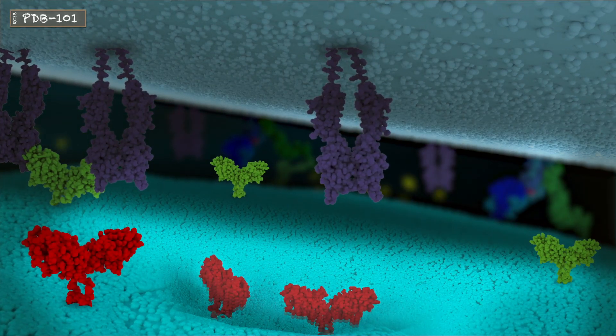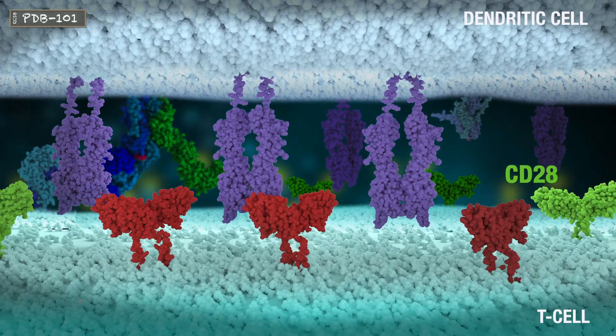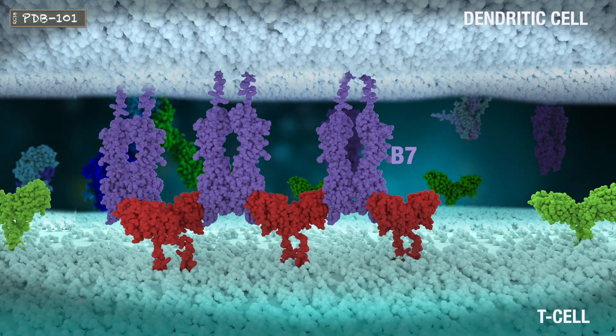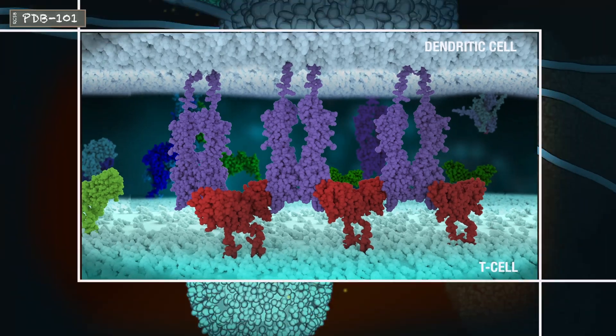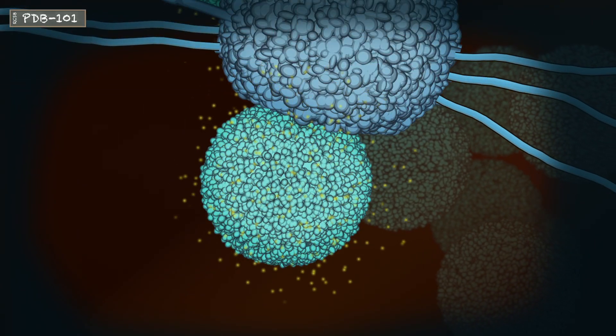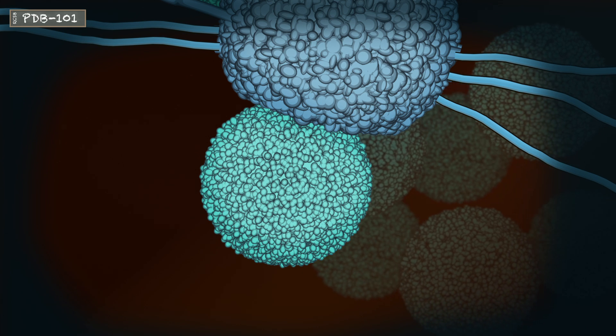Once there, CTLA-4 interferes with the reception of the secondary signal, outcompeting the T cell CD28 for B7 proteins on the dendritic cell. CTLA-4 binding of B7 counteracts the stimulatory primary signal, halting full T cell activation and reducing proliferation.